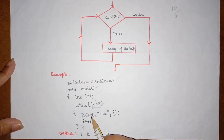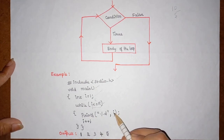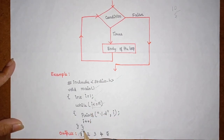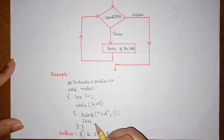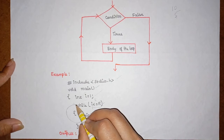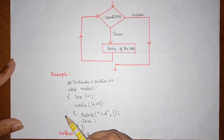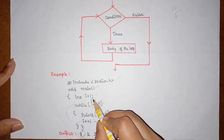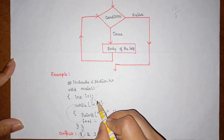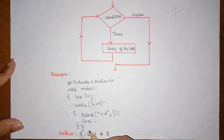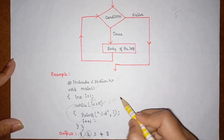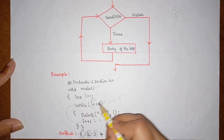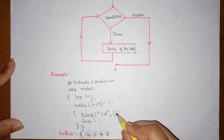Initially i is 1. The condition checks whether 1 is less than or equal to 5 — the result is true, so it enters the block and prints the value of i, which is 1. Then i++ increments i to 2. Control moves back to the while condition; 2 is less than or equal to 5, so it prints 2, increments to 3, checks 3 — true, prints 3, increments to 4, checks 4 — true, prints 4.